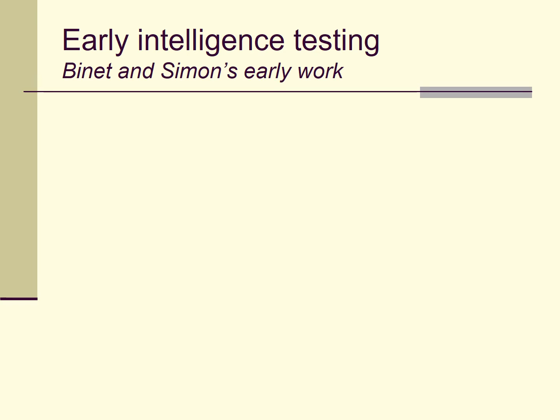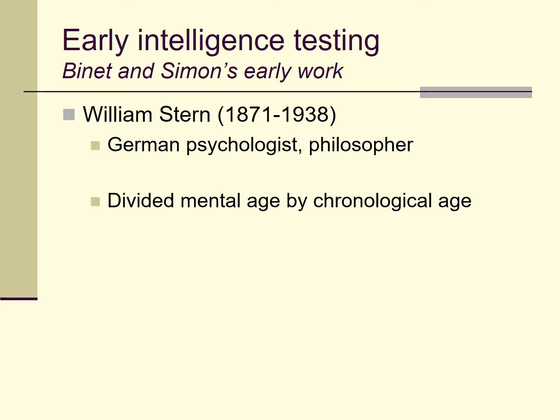William Stern, a German psychologist and philosopher, proposed dividing mental age by chronological age to yield a quotient — later termed the intelligence quotient, or IQ. Someone with an IQ above 100 has a higher mental age than expected for their chronological age; someone below 100 has a lower mental age than expected. Multiplying by 100 eliminates the decimal.